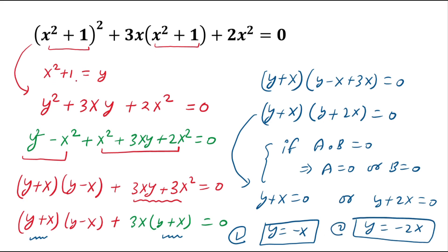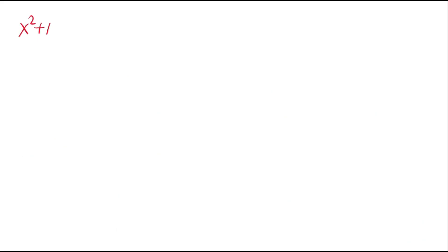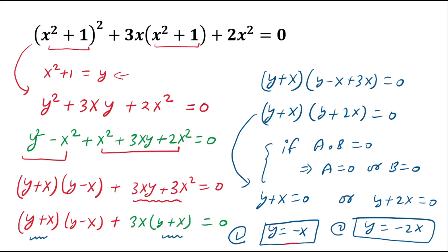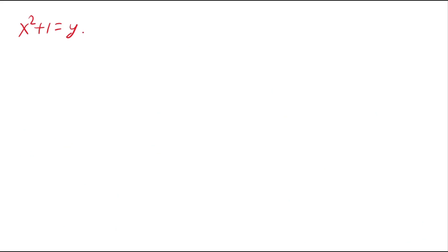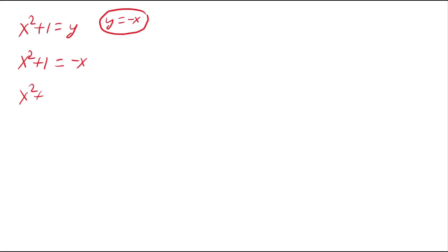We know that x² + 1 = y. In Case 1, y = -x, so x² + 1 = -x. Adding x to both sides gives x² + x + 1 = 0.